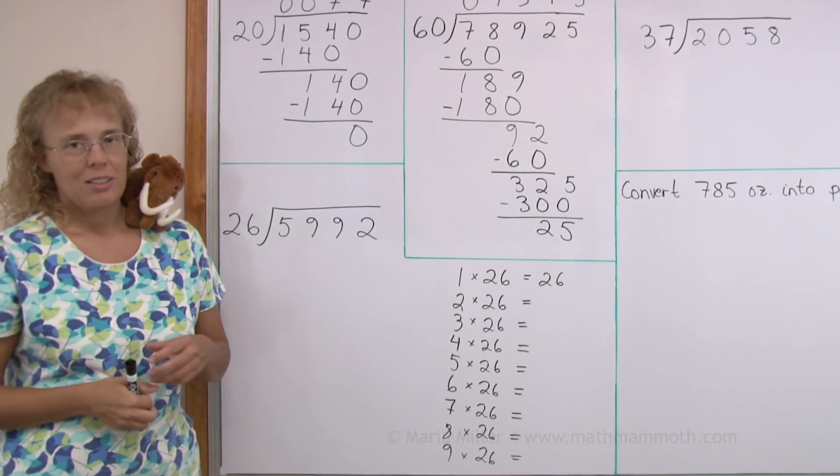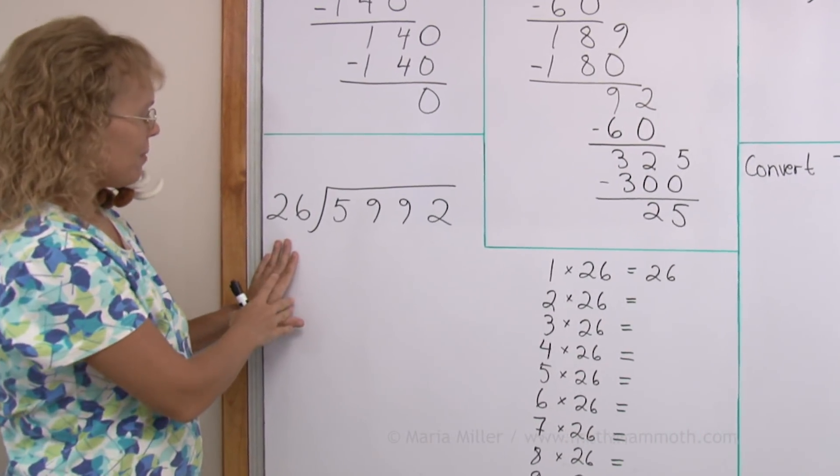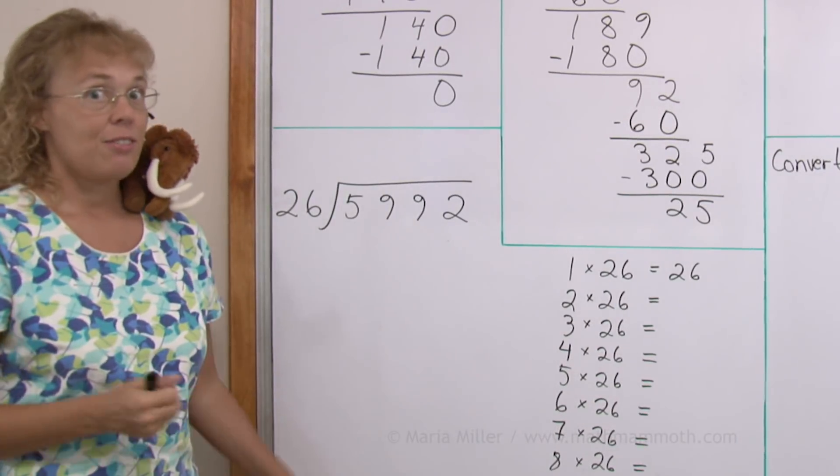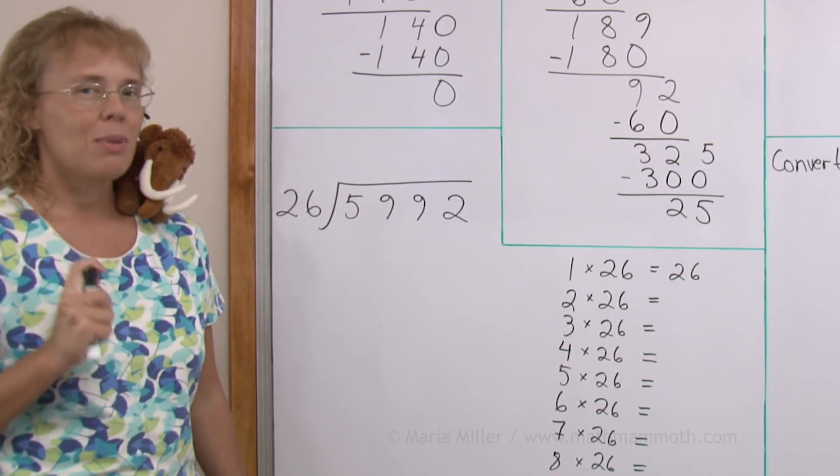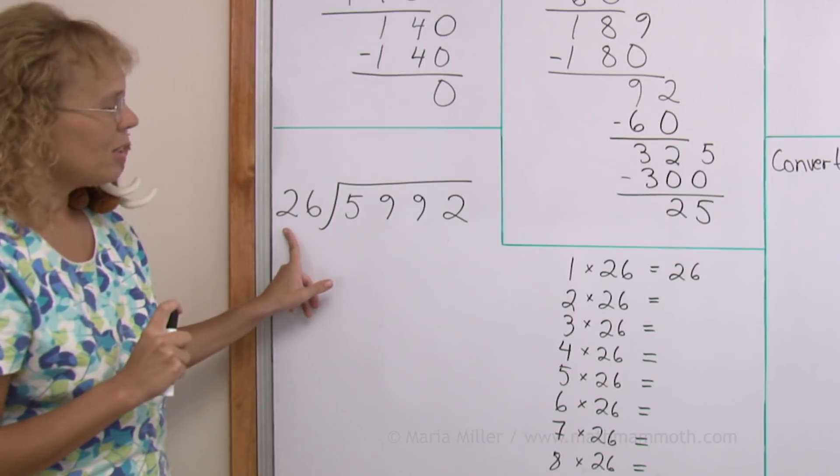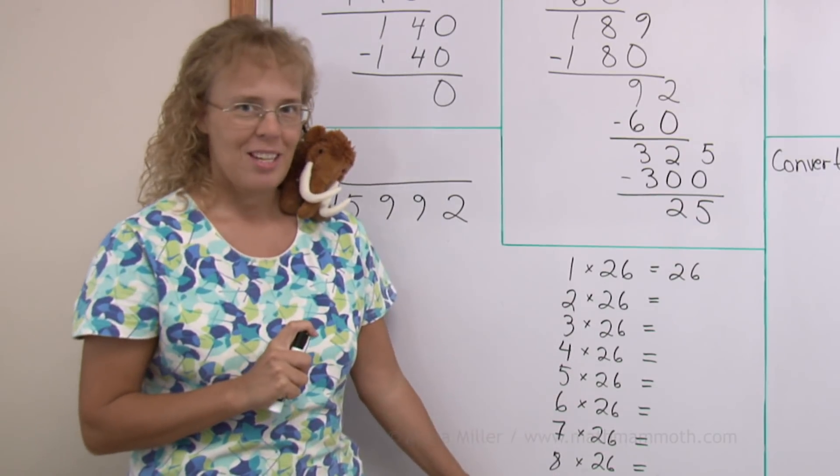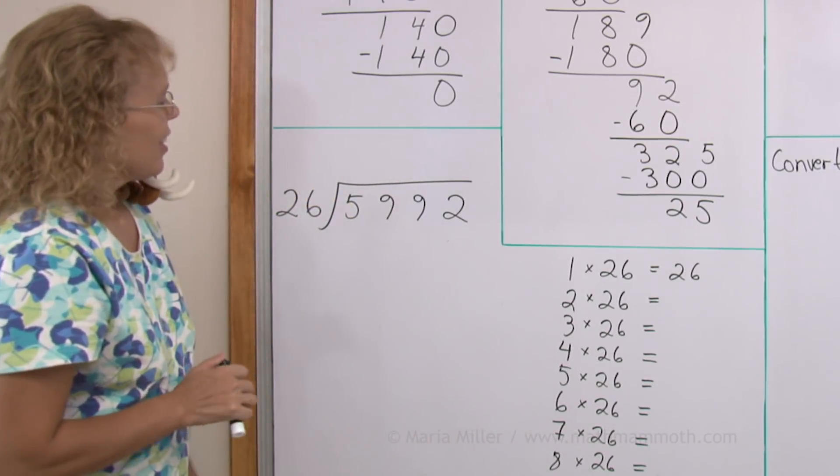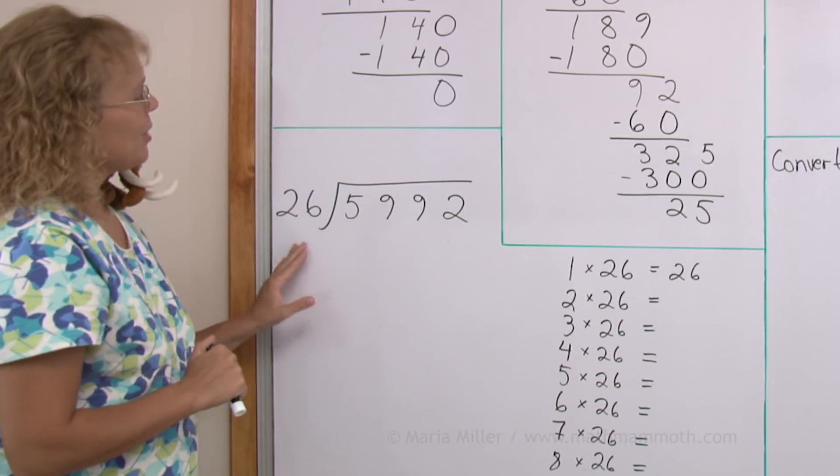Now, when your divisor is not a whole 10, then it is very helpful if you build a multiplication table for that number somewhere on the side. Okay? And let's see. 26.